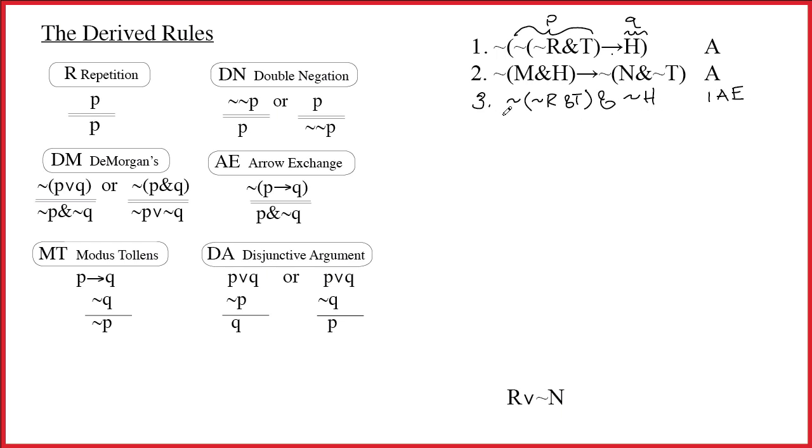It's the practice exercises which are supposed to help you get good at manipulating formulas like this. Okay, so that's an ampersand. That's the payoff for doing an Arrow Exchange is it turns into an ampersand. So definitely let's pull that apart. We'll put tilde, tilde R ampersand T on line 4. And then we'll put tilde H on line 5. And that's 3 ampersand out done twice.